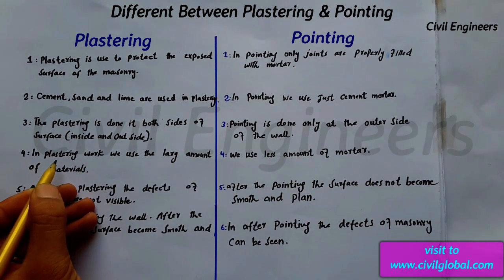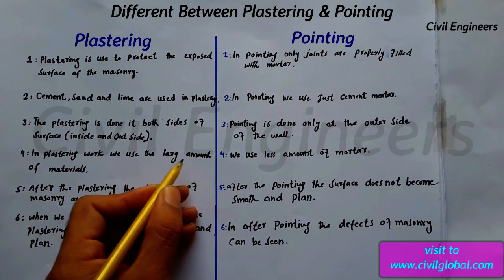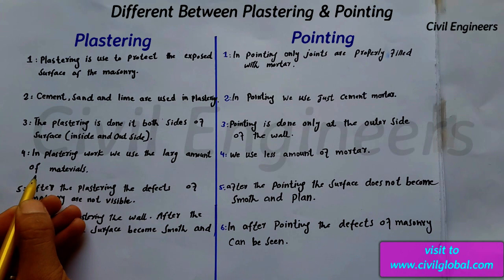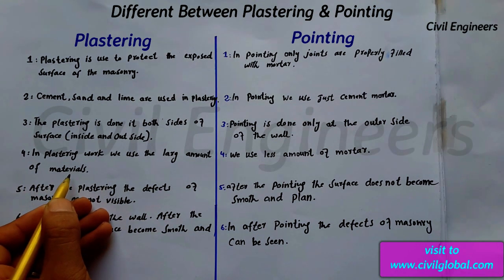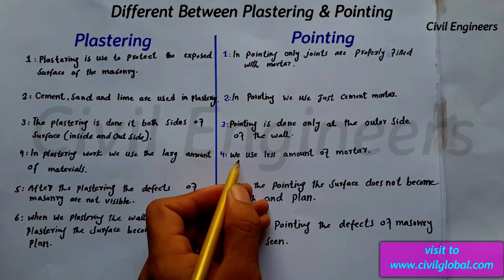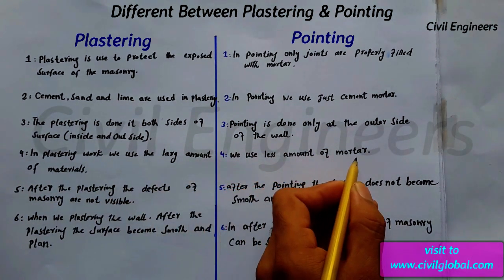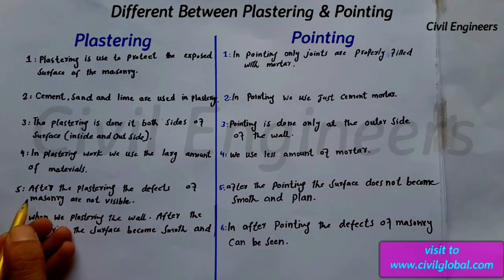Number four, in plastering work we use a large amount of materials. But in pointing, we use a less amount of mortar.